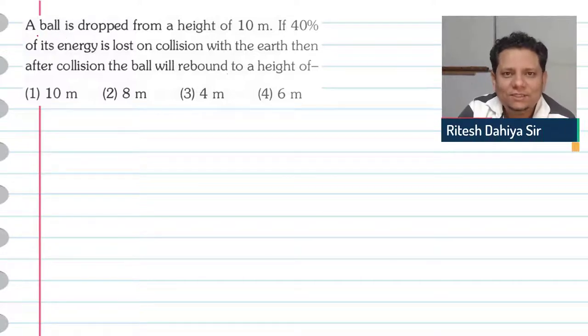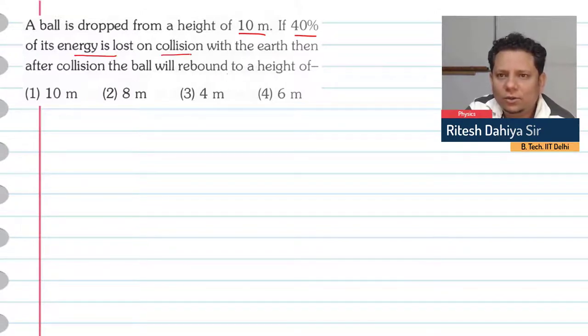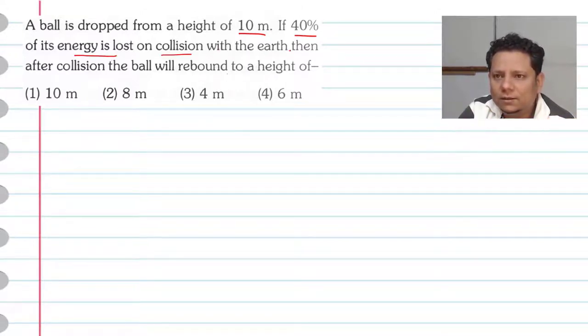Next question. A ball is dropped from a height of 10 meters. If 40% of its energy is lost on collision with the earth, then after collision,